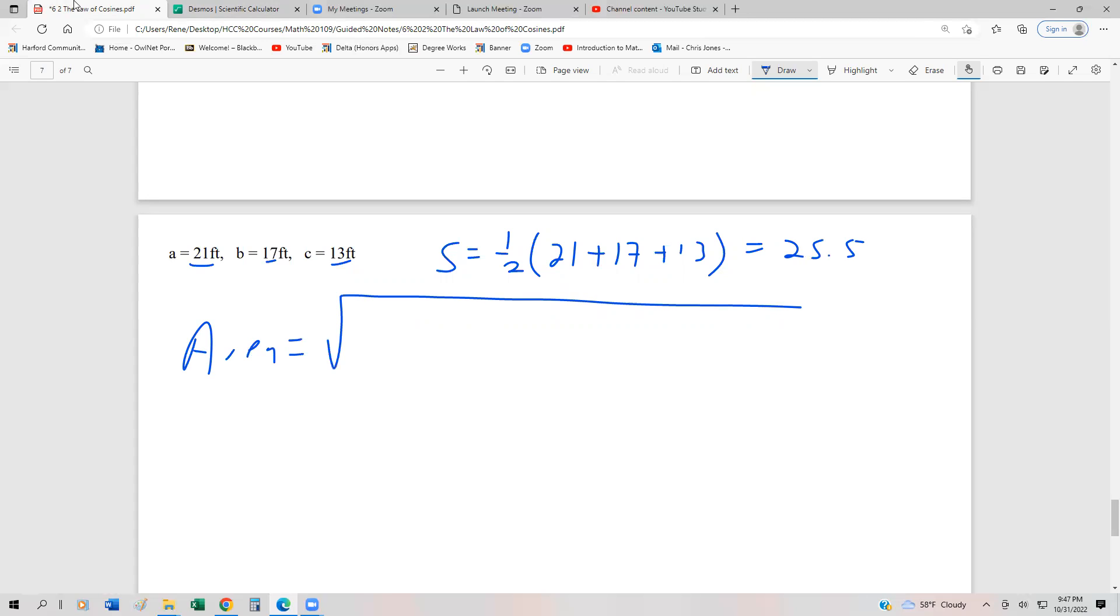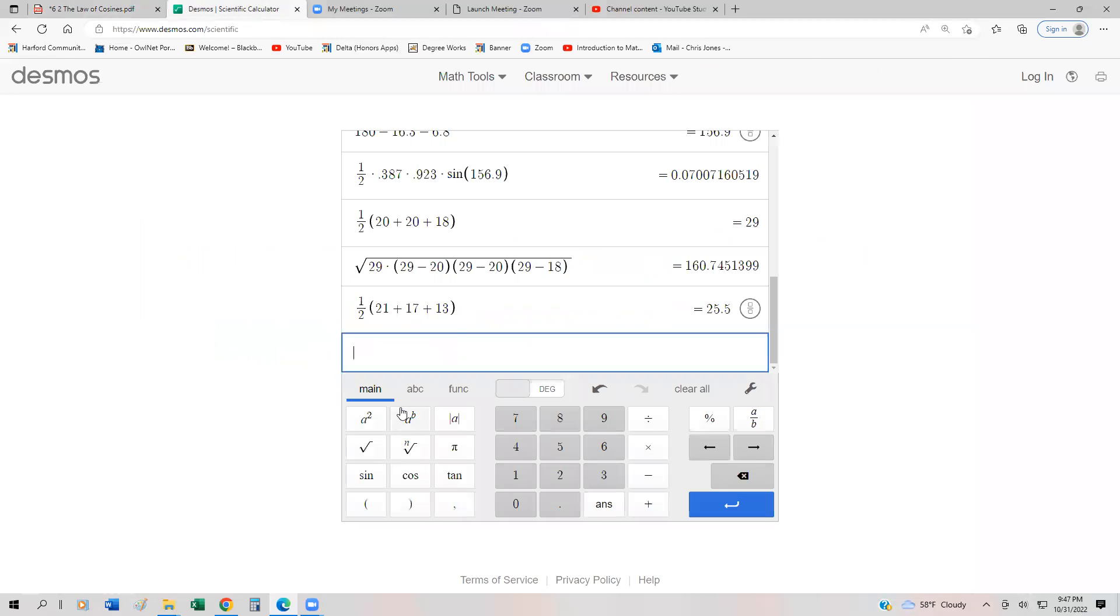So our area is the square root of 25.5 times 25.5 minus 21 times 25.5 minus 17, and then times 25.5 minus 13. And so we can go ahead and compute that. So just give me a moment. I'll shove it into the calculator. So we have a square root of 25.5 times 25.5 minus 21,